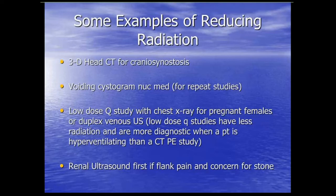Some examples of reducing radiation. A 3D head CT for craniosynostosis gives better resolution than plain films — you can actually see whether there's real craniosynostosis — and you're getting about the same dose as x-rays while being much more diagnostic. Because the skull has much more intrinsic contrast, you don't need high doses to see what you need. Tailoring the protocol to what you're looking for can tremendously reduce dose.